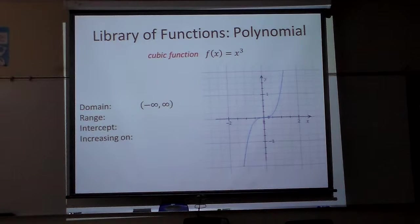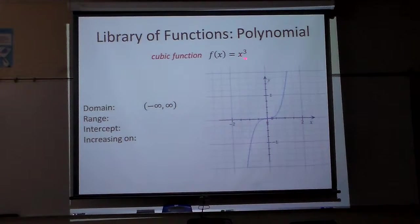So we know we have a domain, because it's not limited in any—it's not a square root, or it's not a rational function. So the domain is from negative infinity to infinity. The range will be the same, because it's starting down here at negative infinity and goes all the way up to infinity.